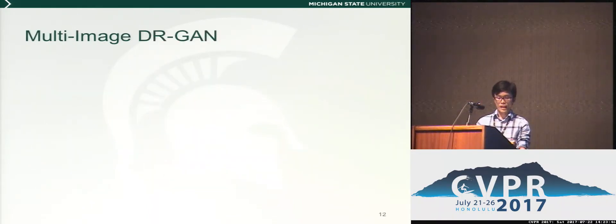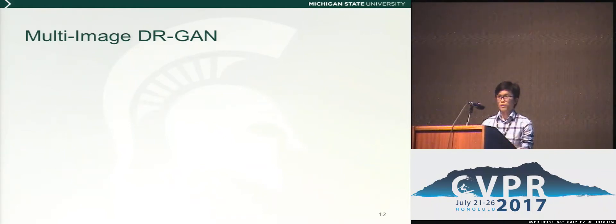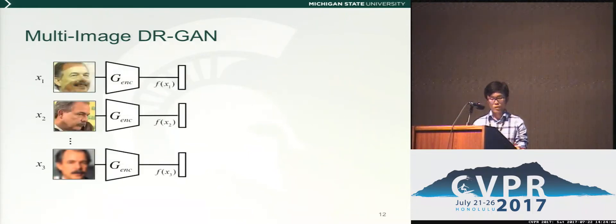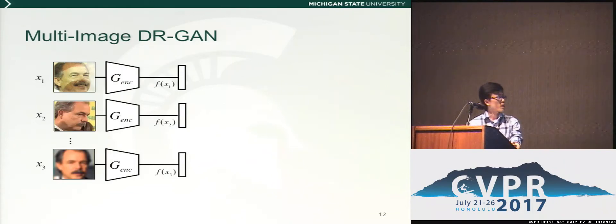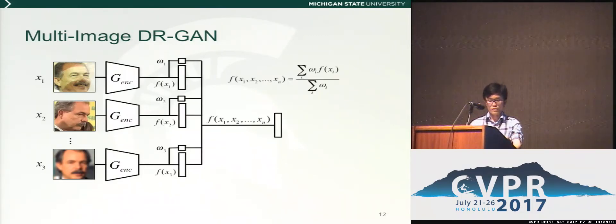Up to this point, the IDEA GAN can process a single input image. What if we have multiple images of the same subject? We propose a multiple-image IDEA GAN to fuse all images to produce a unified feature. The same encoder will be applied to all input images. In addition to extracting the feature fx, we also estimate a confidence coefficient omega. The fused feature of all images is a weighted average of all features using the weight omega.